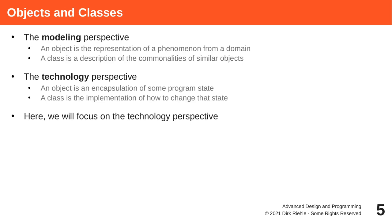In the technology perspective, an object is really just data encapsulated and protected by methods, where a class defines those methods, the implementation, and the computer-executable behavior around the data. Modeling is arguably more important than the technology perspective, but you can't do without proper implementation. So here we will go back and forth between them.